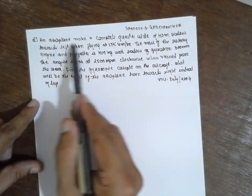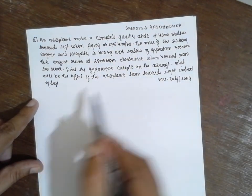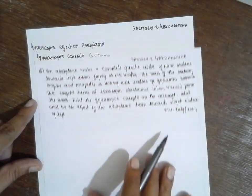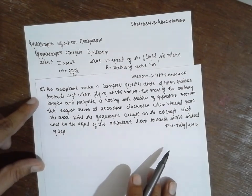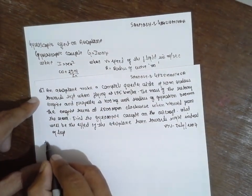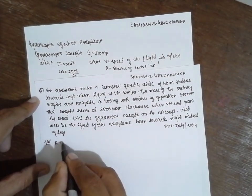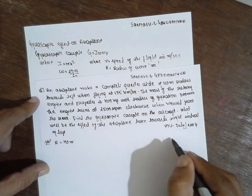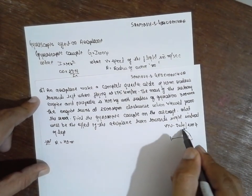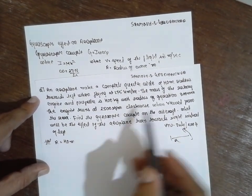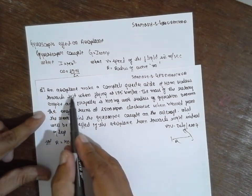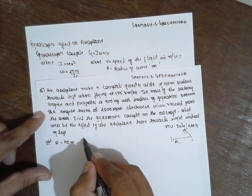Now this is the problem. An aeroplane makes a complete quarter circle of 40 meter. 40 meter is nothing but as per the formula, they are given R here. R is equal to 40 meter. That means at a point the curve making aeroplane, this is nothing but R towards the left. They have set it to the left.